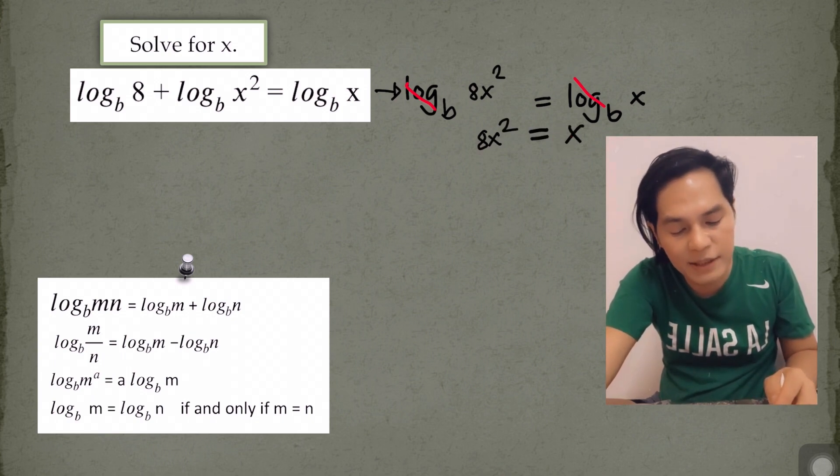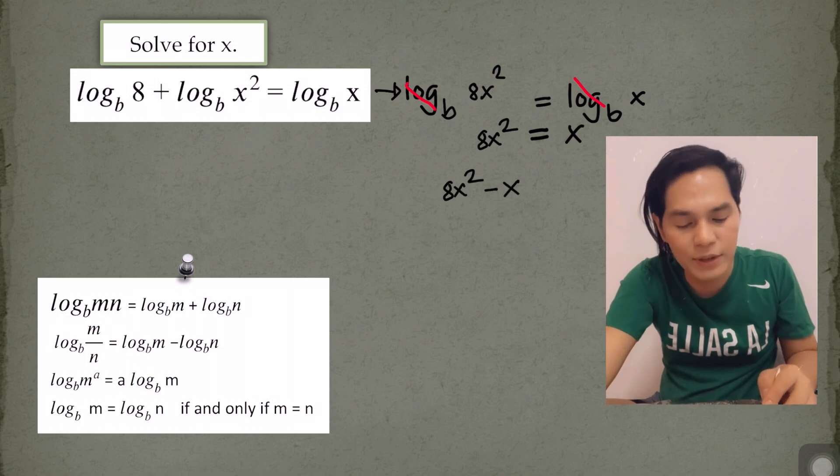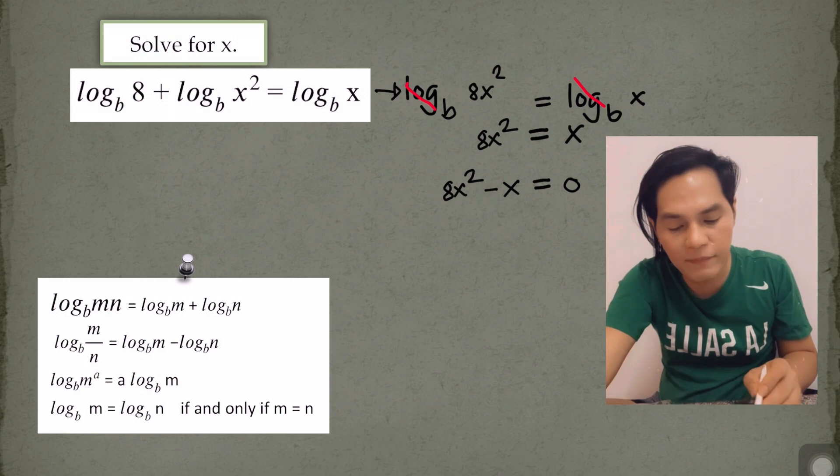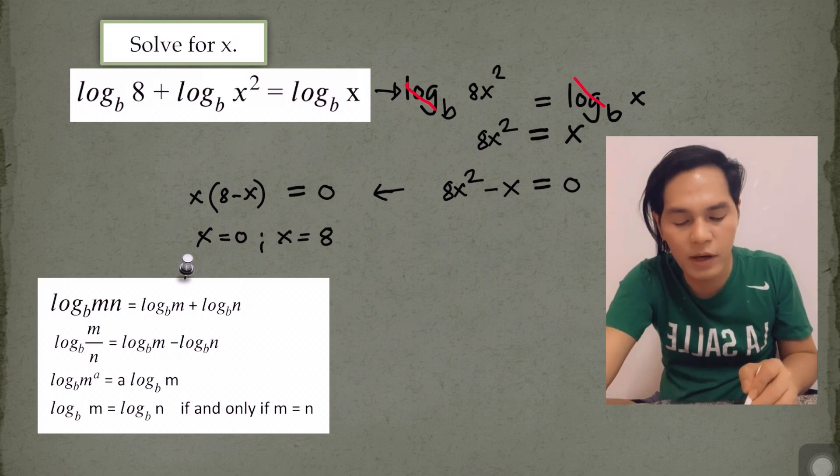And then transfer x on the other side. Now it is a quadratic equation. We can solve this one by factoring. So the common factor is x. So equate it to 0. The first value is 0, and the other one is positive 8. But the solution here is 8. Why?